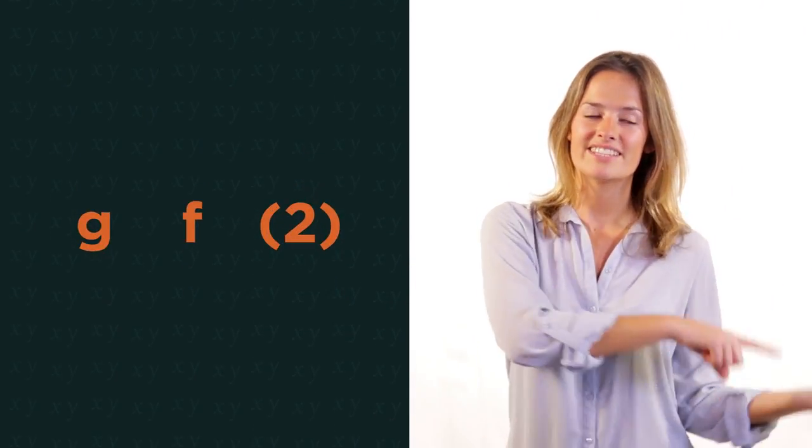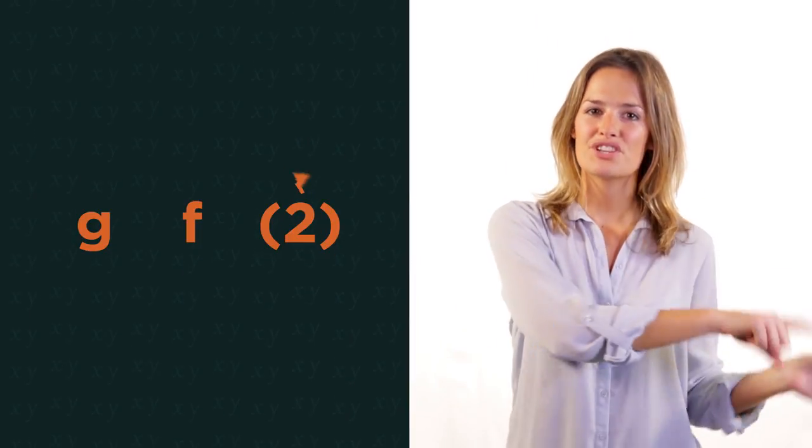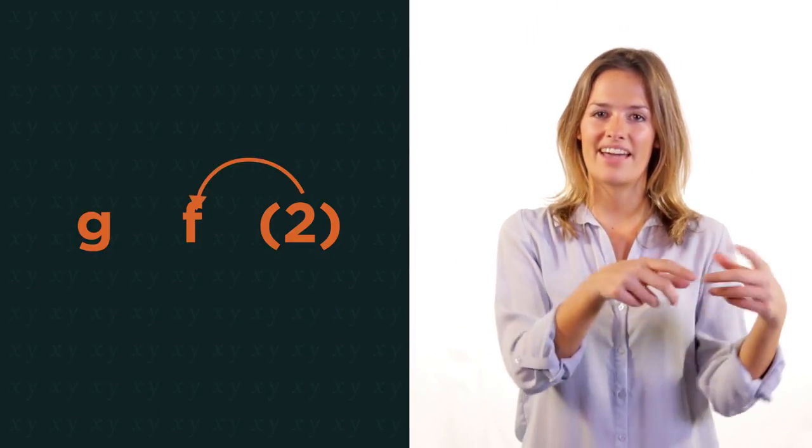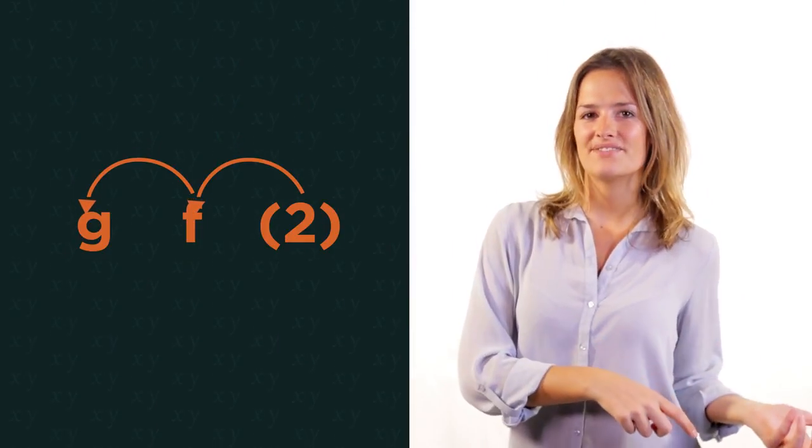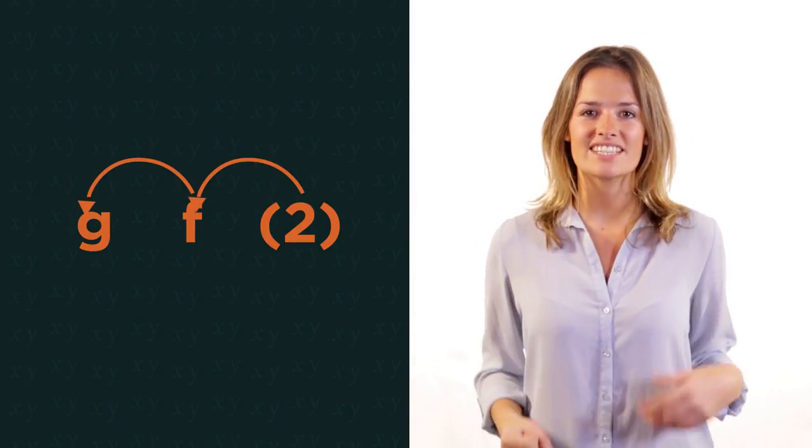You just need to remember to read backwards. So from right to left. Put 2 into f, and then the output of that into g. We'll look at inverse functions and the graphs of functions in other videos.